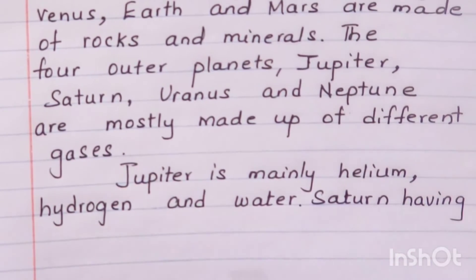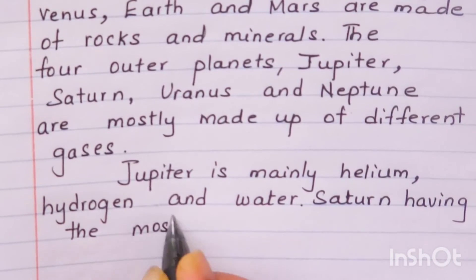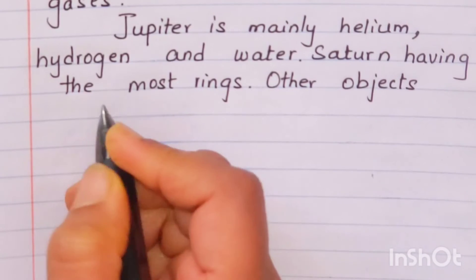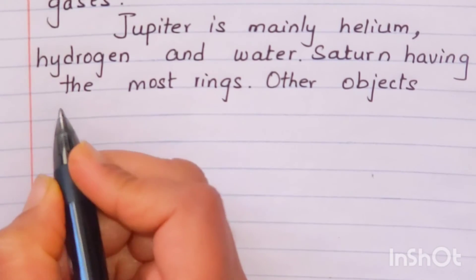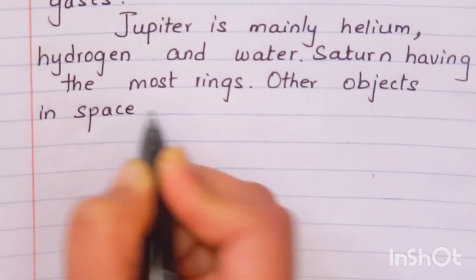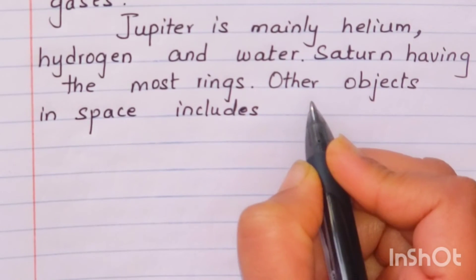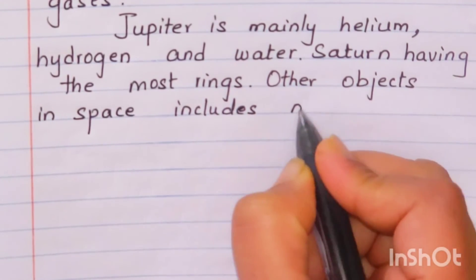Jupiter is mainly helium, hydrogen and water. Saturn having the most rings.